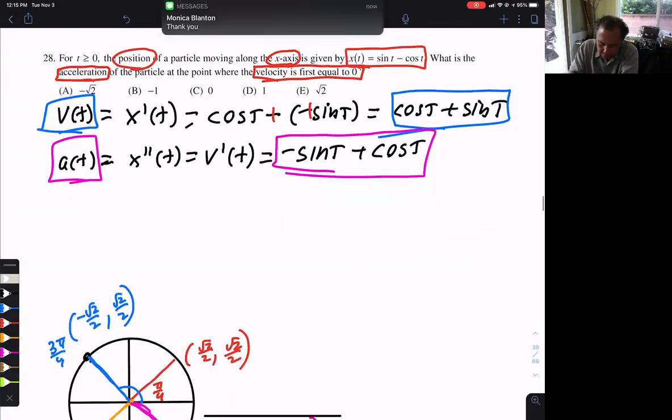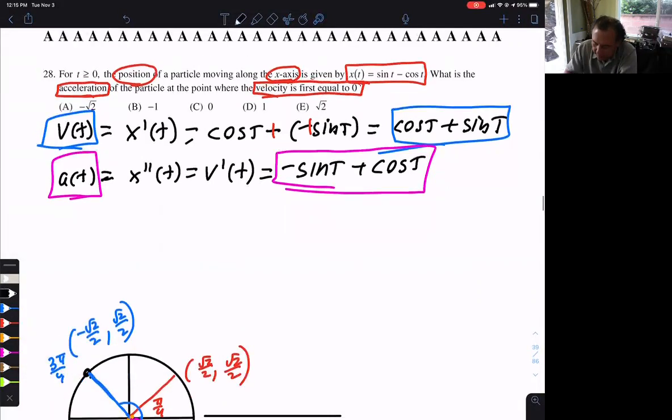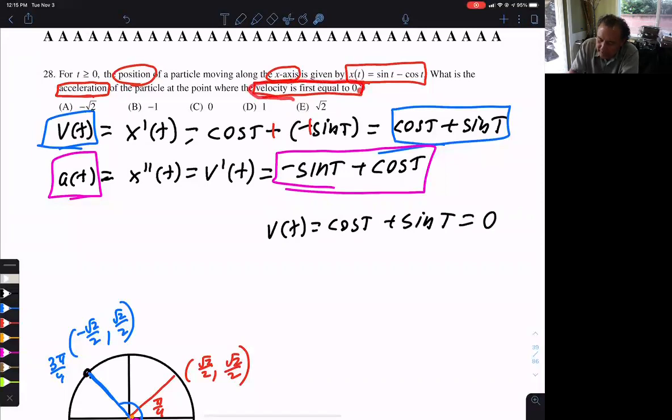Now, do you agree for velocity, which is cos t plus sine t, we want that zero. Why? Because it says when velocity first equals zero. So in order for this to be zero, don't you agree cosine and sine must cancel out? So they must be the same number, but just one's positive and one's negative.